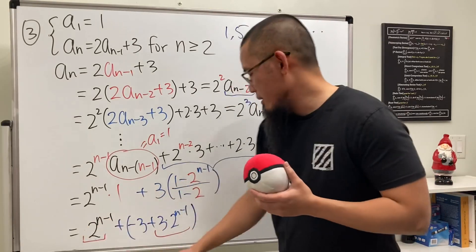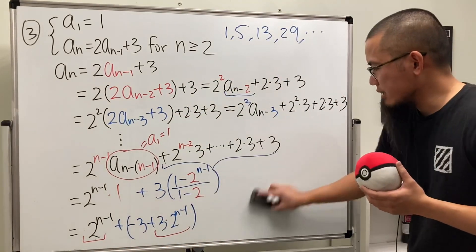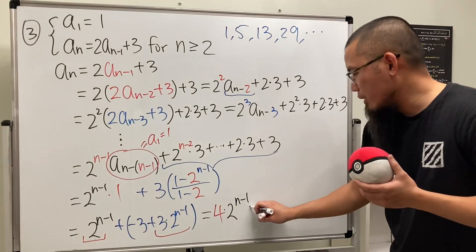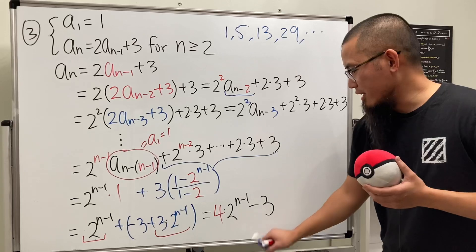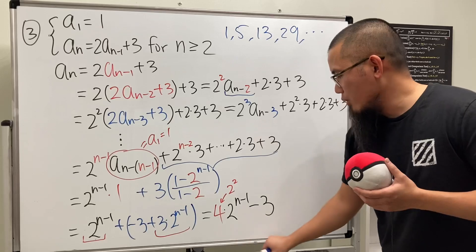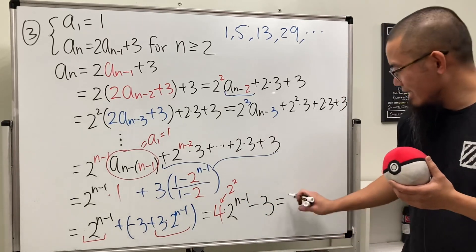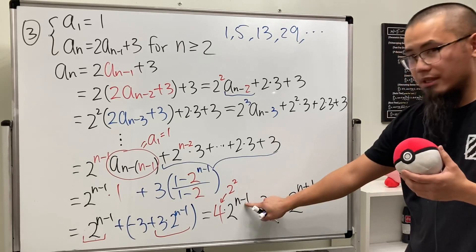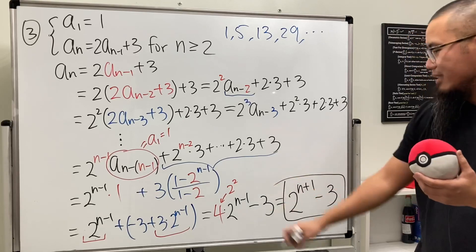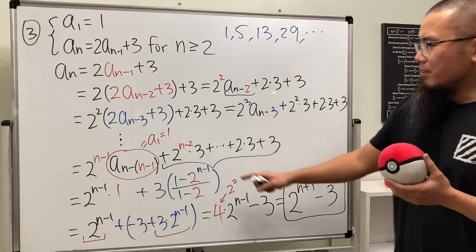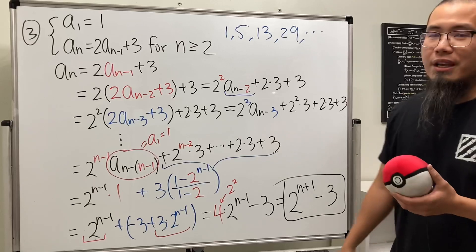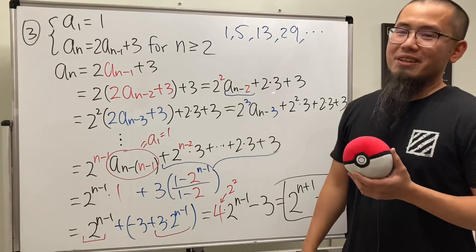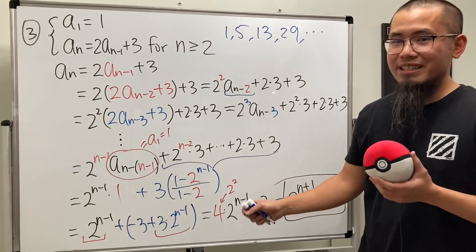The coefficient becomes 1 + 3 = 4 for the 2^(n-1) term, so we have 4·2^(n-1) minus 3. Since 4 = 2², we can combine the powers: 2²·2^(n-1) = 2^(n+1). So the final answer is aₙ = 2^(n+1) - 3. This approach is really cool when it works, but unfortunately it doesn't always work since there are many crazier recursive sequences out there.